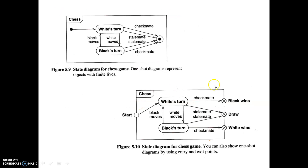A one-shot state diagram example is a game of chess. The name is written in the upper left corner. There are two states: white's turn and black's turn. The start is indicated by a solid circle. White moves and black moves are the transitions. The diagram ends with a checkmate or a stalemate — stalemate is a draw. The final state is indicated by a bullseye symbol. You can also draw the same diagram using entry and exit points, showing separately: black wins, draw, or white wins.